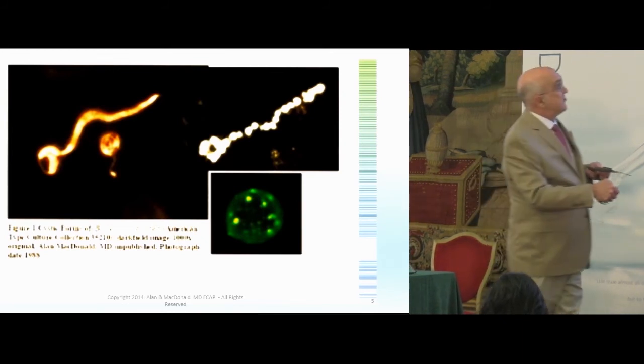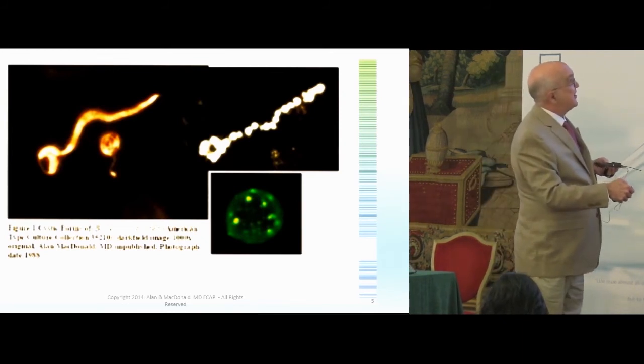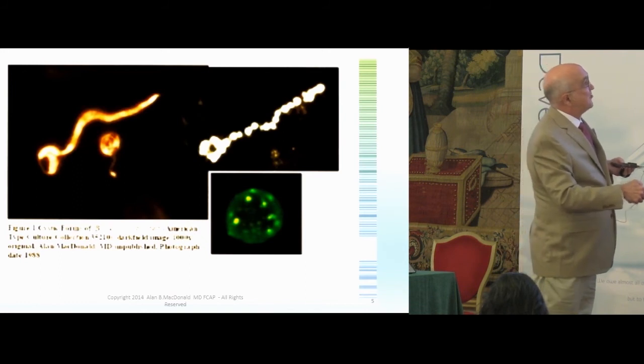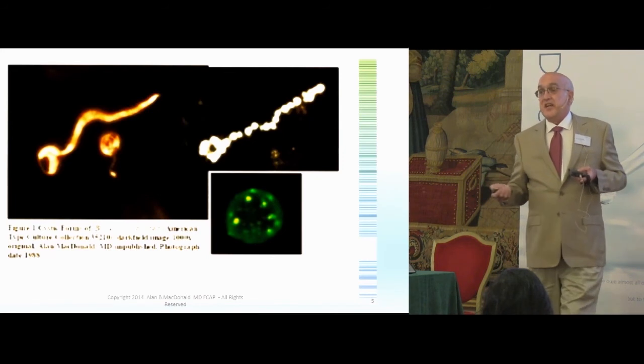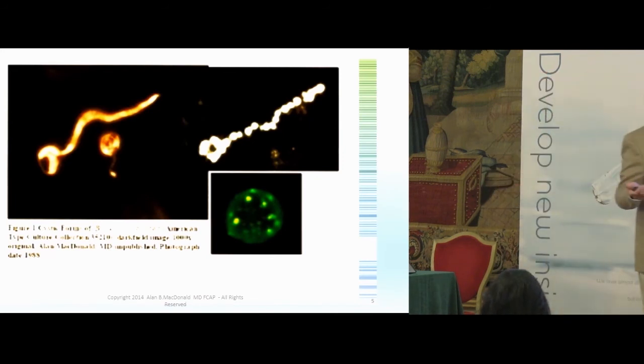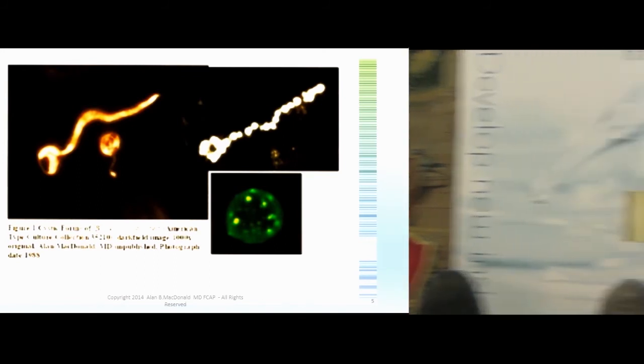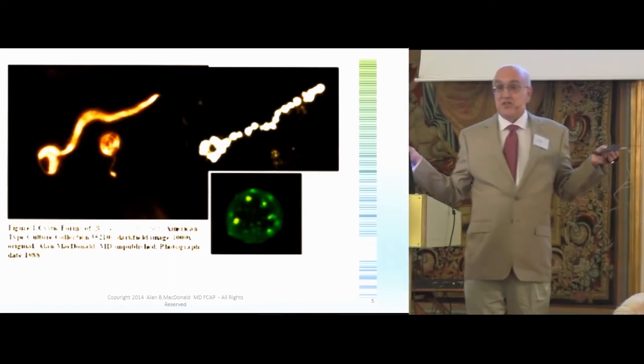And not all the granules are the equal size. Some of them are actually kind of rectangular, some small, some large. And these all contain DNA, and each of the granules contains the complete complement needed to make infinite numbers of Borrelia.